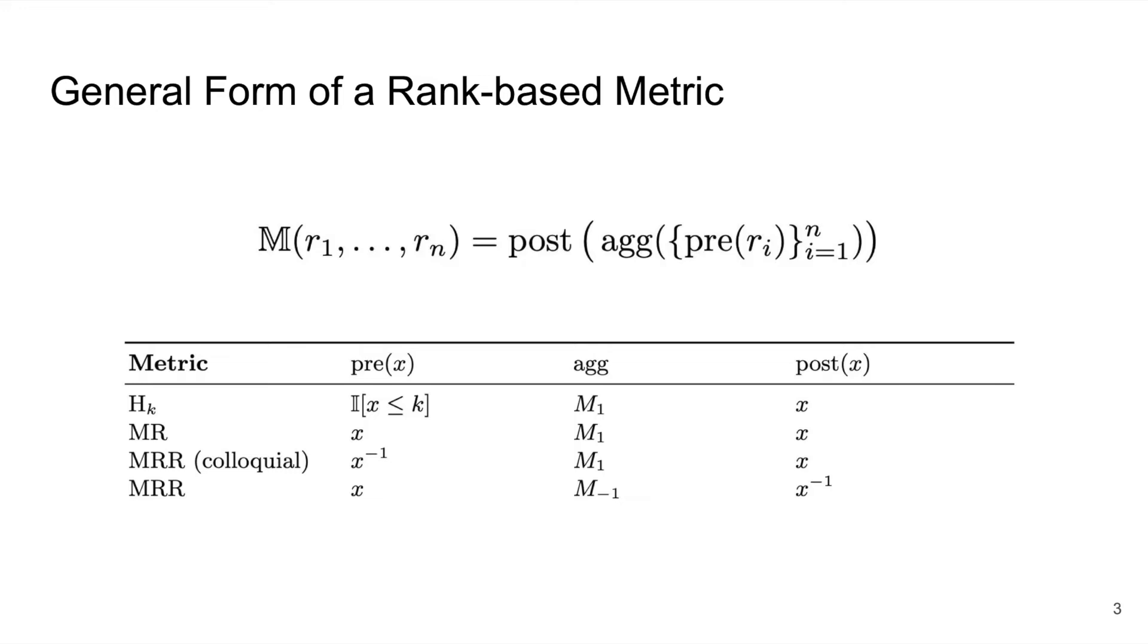Interestingly, this general form also allows us to reformulate the mean reciprocal rank using the harmonic mean, a special case of the generalized Hölder mean where p is negative one, and using the inverse as the post-aggregation. Through the lens of these two Pythagorean means, we can better understand why the mean rank is biased towards large ranks while the mean reciprocal rank is biased towards small ones, despite their co-domains having different properties and being on different scales.